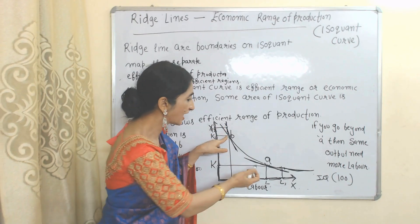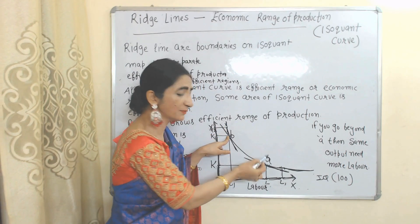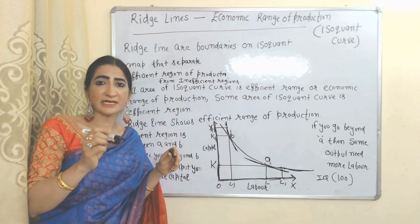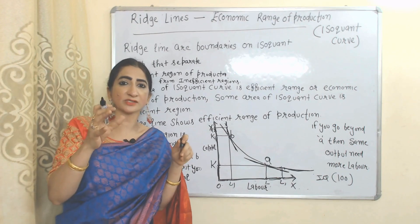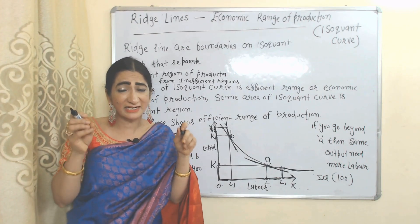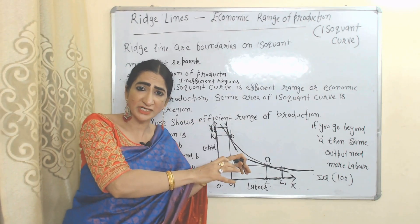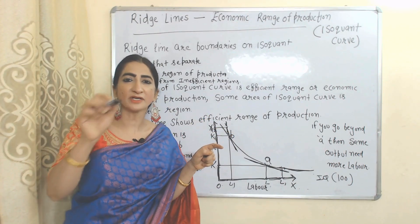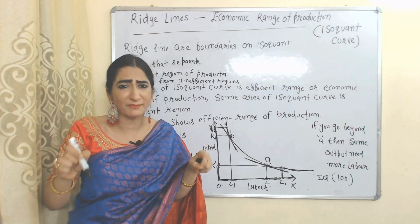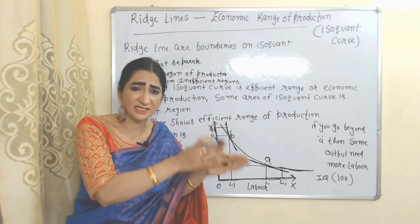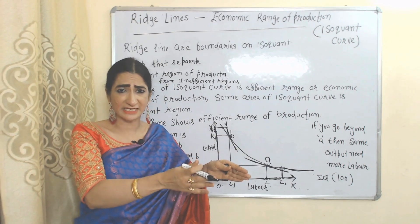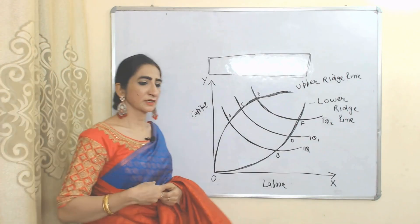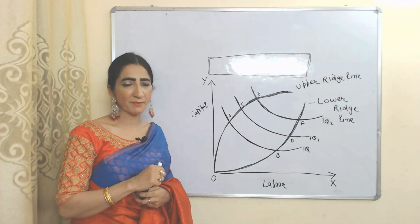Only the area between points A and B is the efficient region. Now, what do we mean by ridgelines? Ridgelines are boundaries on the isoquant map which clearly tell us what is the efficient region — or you can say, what is the economic region and what is not the economic region.